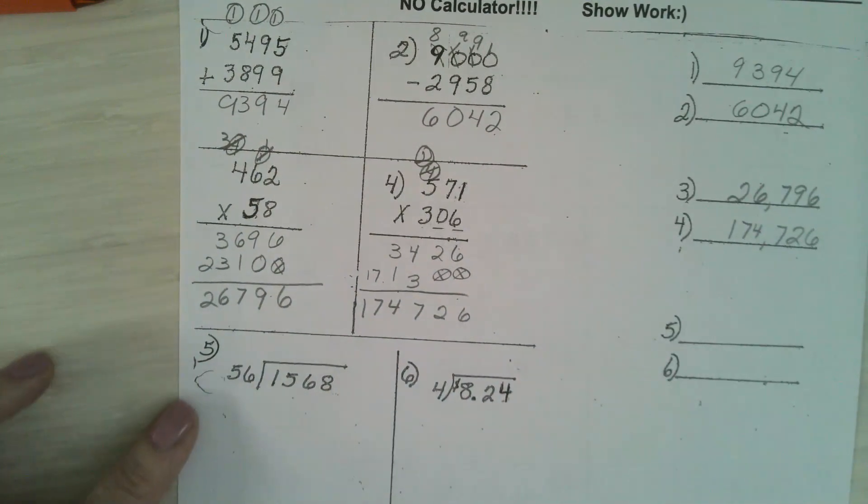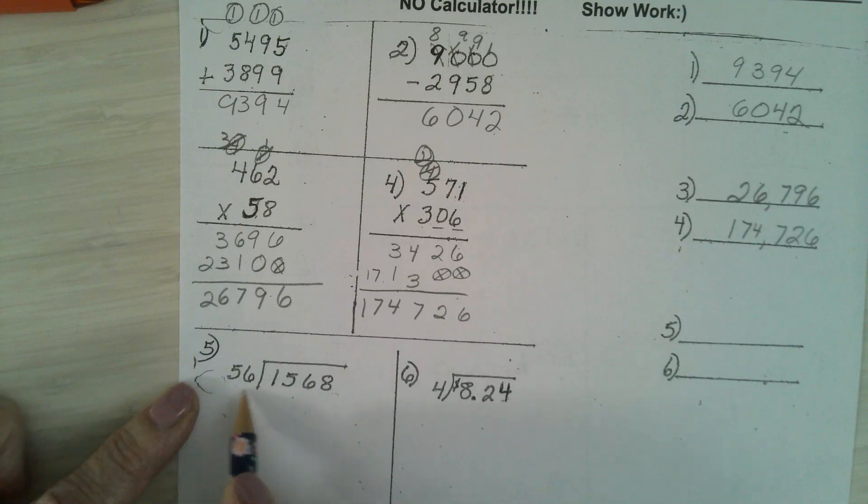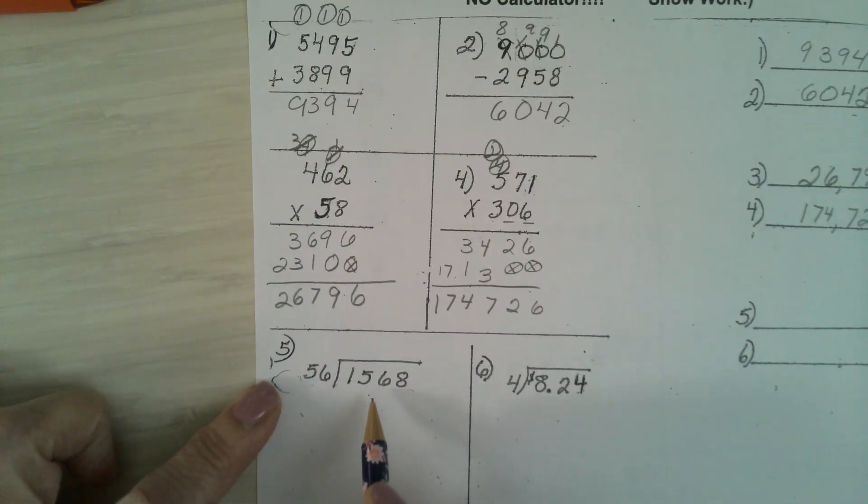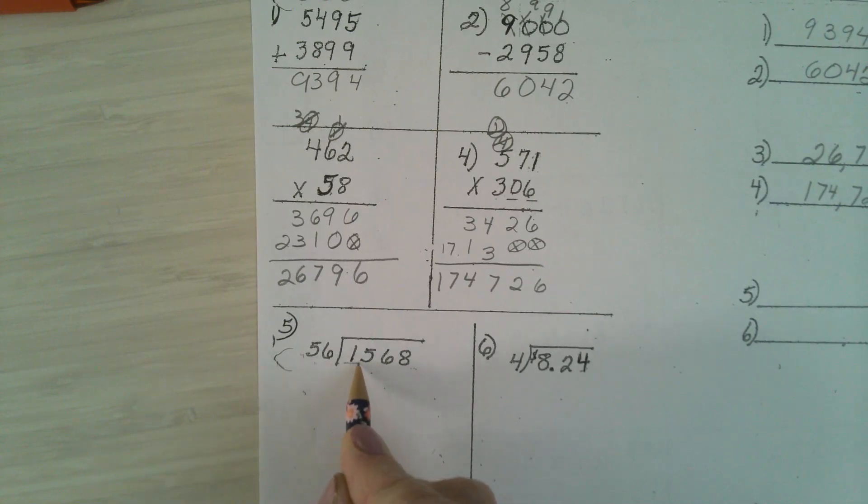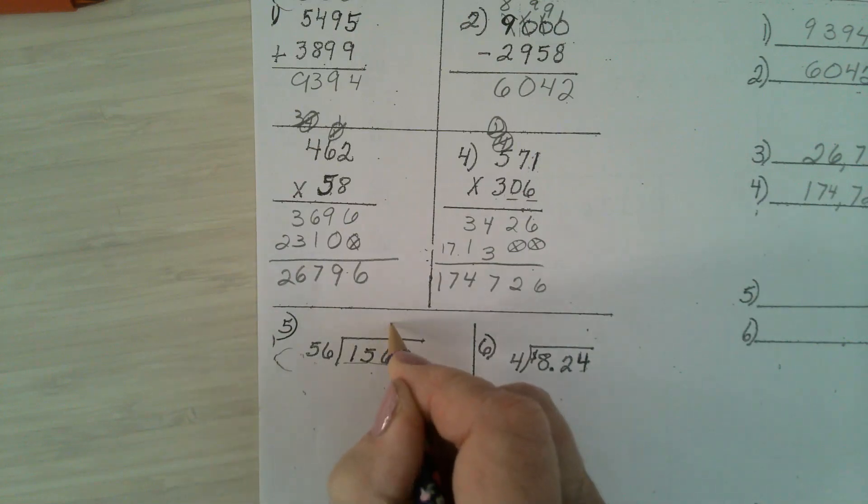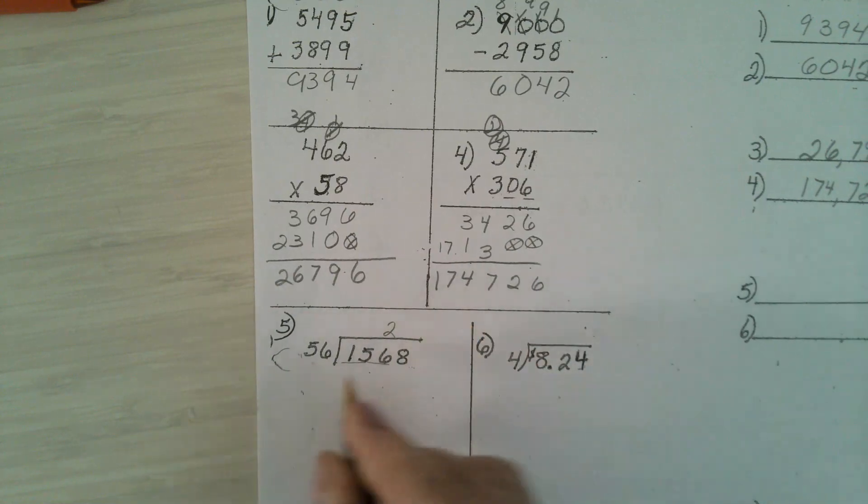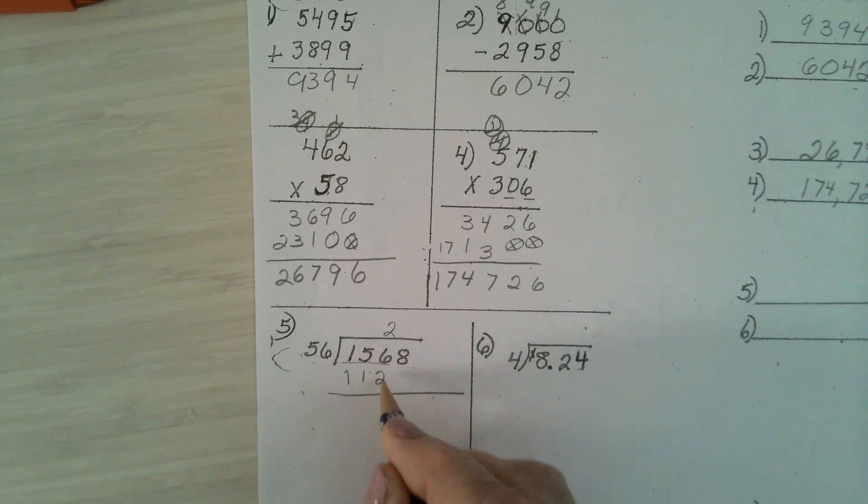Number 5. In problem number 5, 56 is dividing 1,568. How many 56's are in a 1? None. In 15? None. In 156 it will be 2. 2 times 56 is going to be 112. You put 112 underneath it. Subtract. 6 minus 2 is 4, 5 minus 1 is 4. Bring down the next number. We're on problem number 5 on the front side of the paper for those of you that are on the back. I believe you missed it so please fix it.